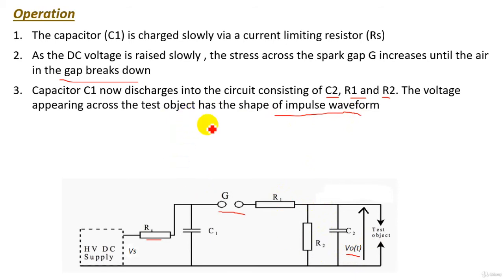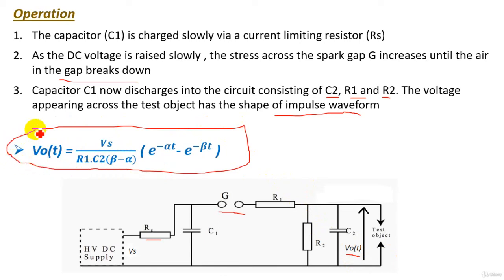And the output voltage here can be obtained by using Laplace transform. We finally concern with the final result of the output voltage waveform. Output voltage waveform can be obtained from this formula. I repeat, this equation is obtained by using Laplace transform. So Vout of t equals Vs over R1 C2 (β - α) times (e^(-αt) - e^(-βt)).